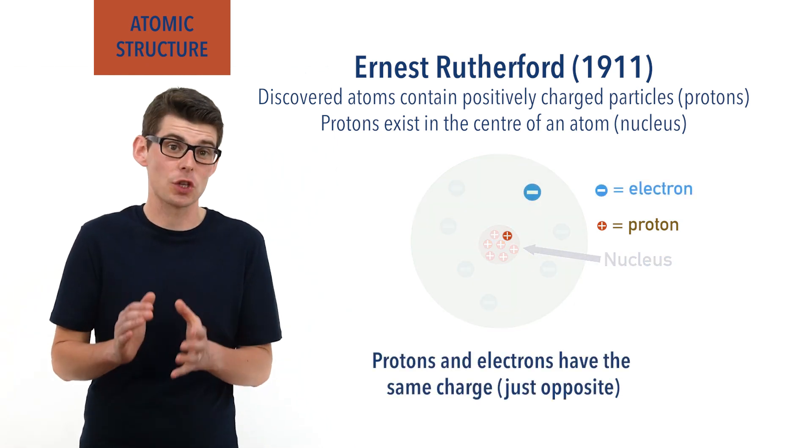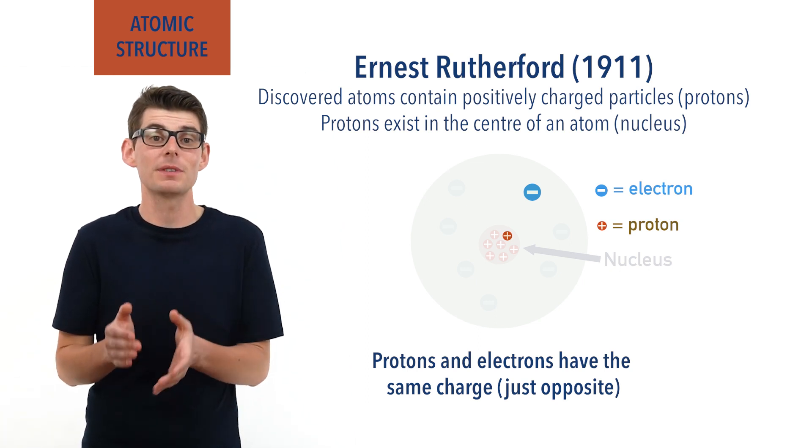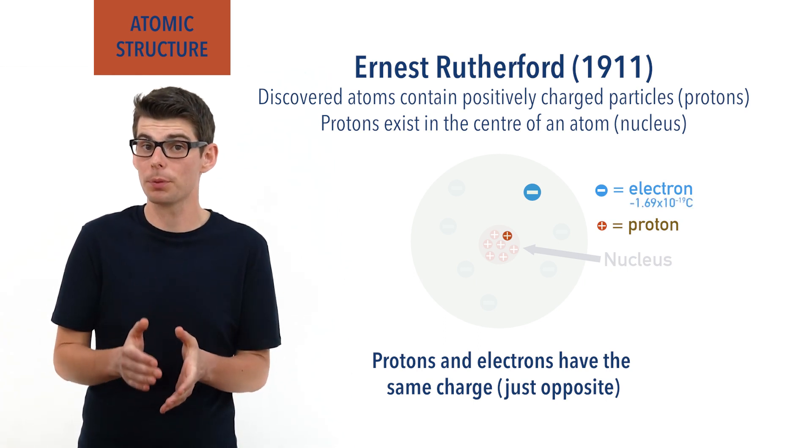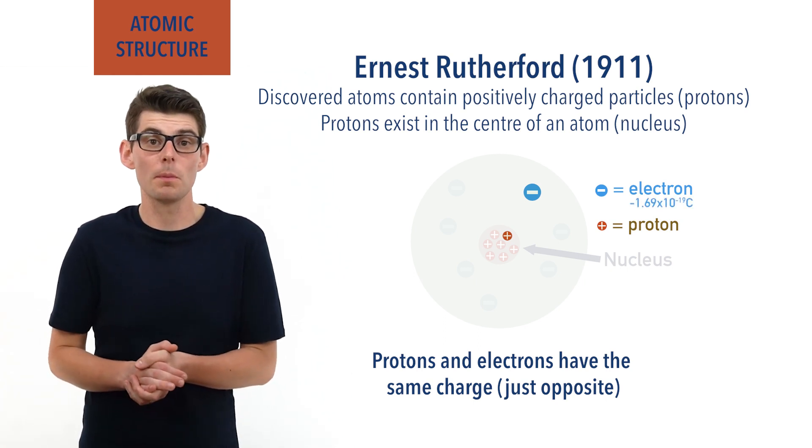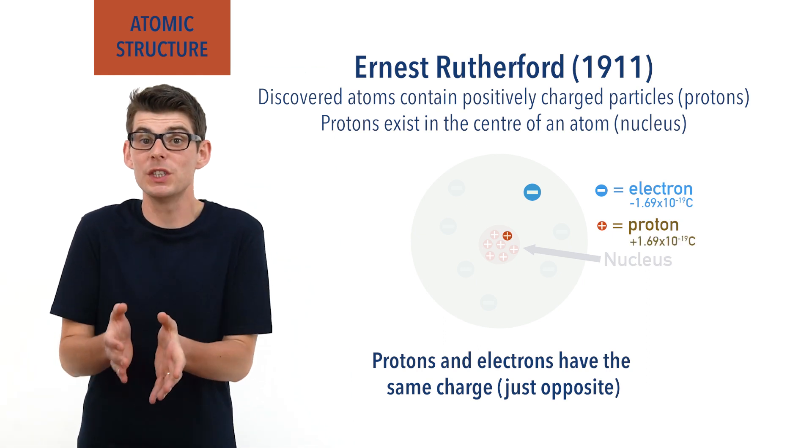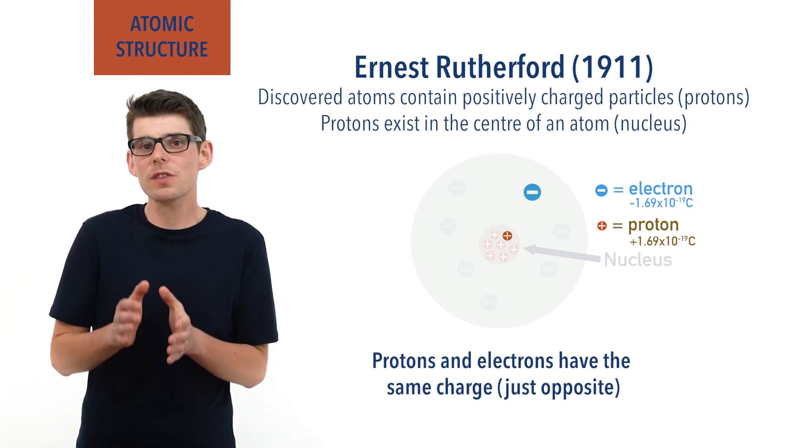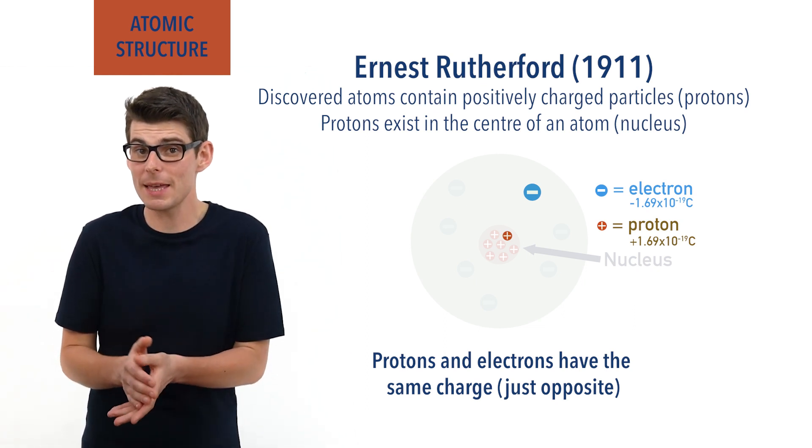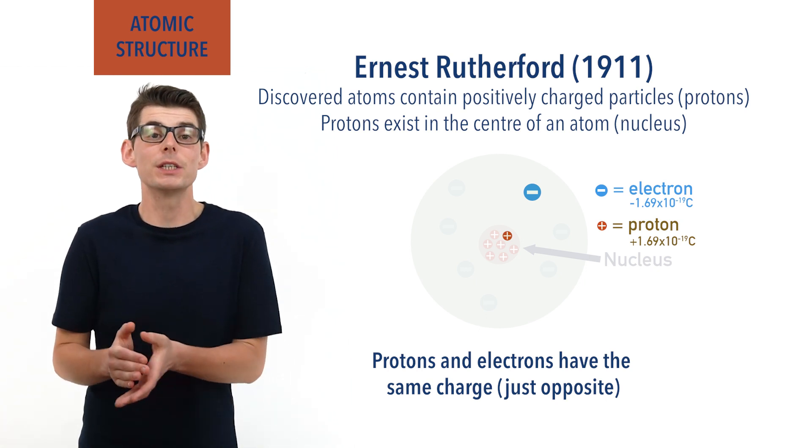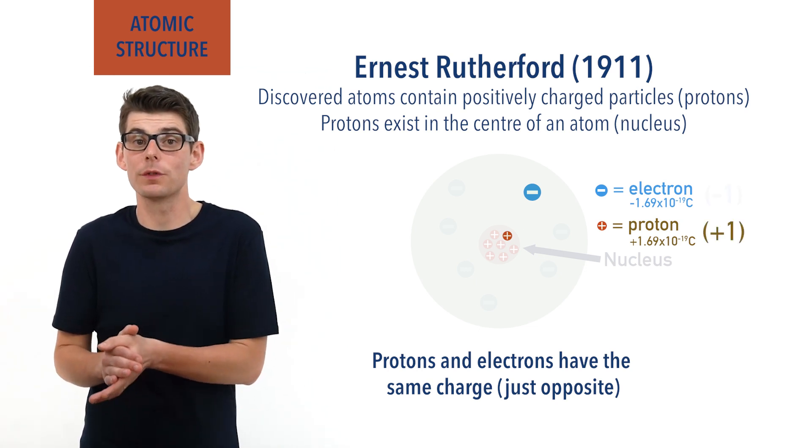We now know the exact charge of an electron to be negative 1.69 times 10 to the minus 19 coulombs, and the exact charge of a proton is positive 1.69 times 10 to the 19 coulombs. Coulombs here just being the unit we use to measure charge. As the charges for both particles are the same, they ended up being described as having relative or elementary charges, positive one for a proton and negative one for an electron.